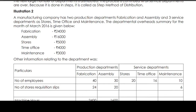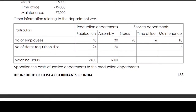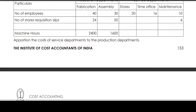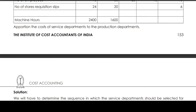Other information relating to the departments: Production departments are Fabrication and Assembly; service departments are Stores, Time Office, and Maintenance. Number of employees: 40, 30, 20, 16, 10. Number of stores requisition slips: 24, 20; service department Maintenance is 6. Machine hours: 2,400 and 1,600. Apportion the cost of service departments to the production departments.